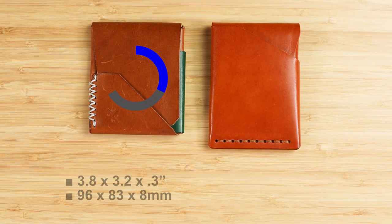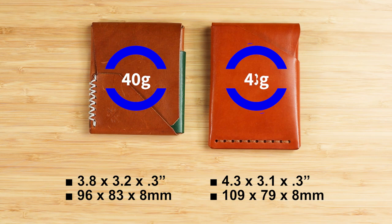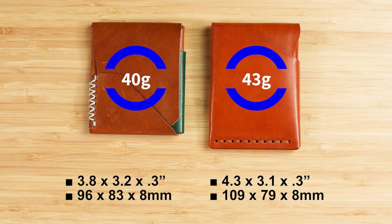From a measurement perspective, the OpenSeas Hubei, you can see, is 3.8 by 3.2 by 0.3. The grain wallet is 4.3 by 3.1 by 0.3. Talking like an auctioneer. And you can see the weights that are there.